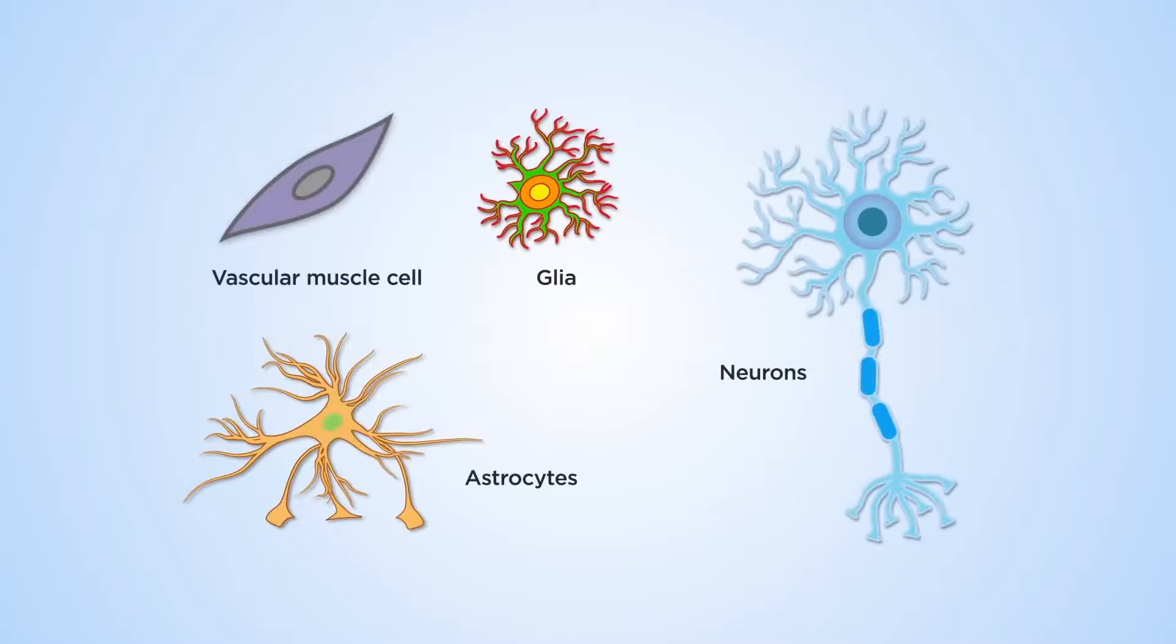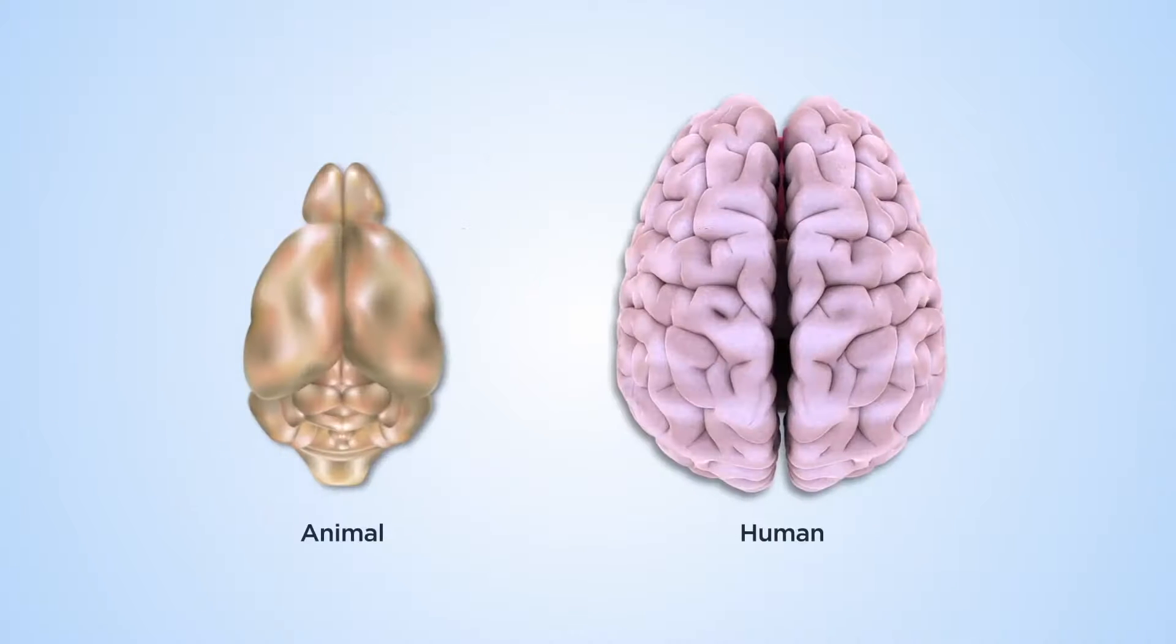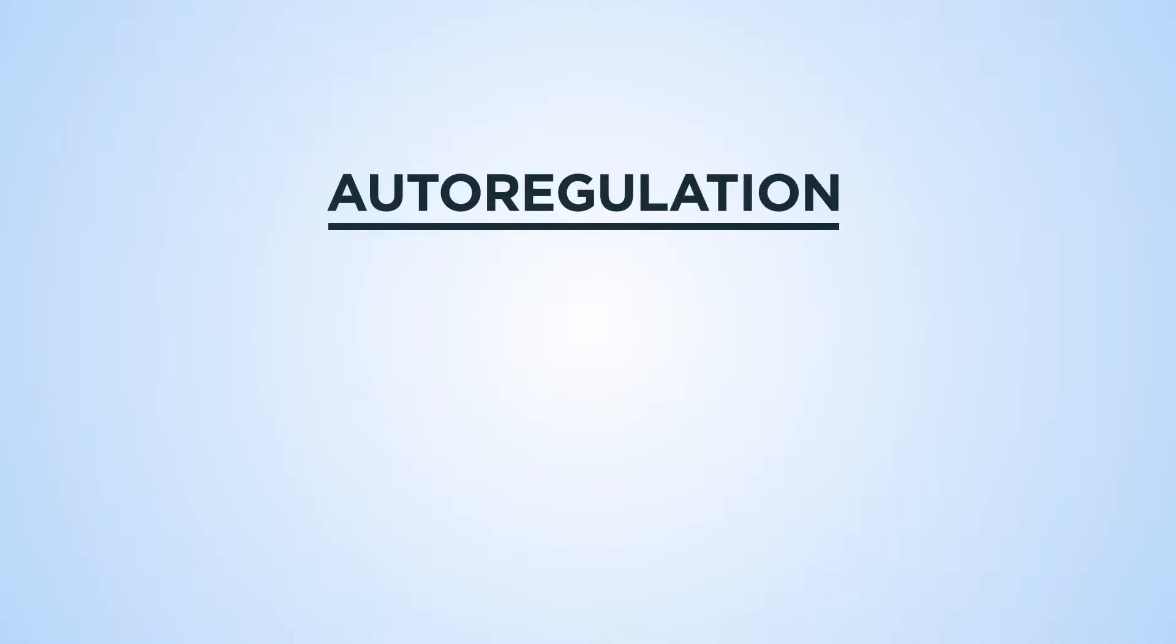The team focuses on arterial muscle cells, neurons, glial cells, and star-shaped astrocytes. Studying these cells in normal physiological conditions and in animal models of disease helps the team understand the role of cerebral blood flow autoregulation in health and pathology.